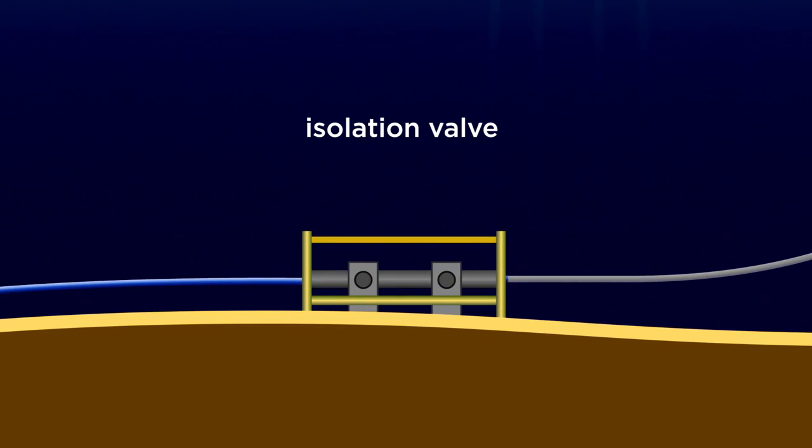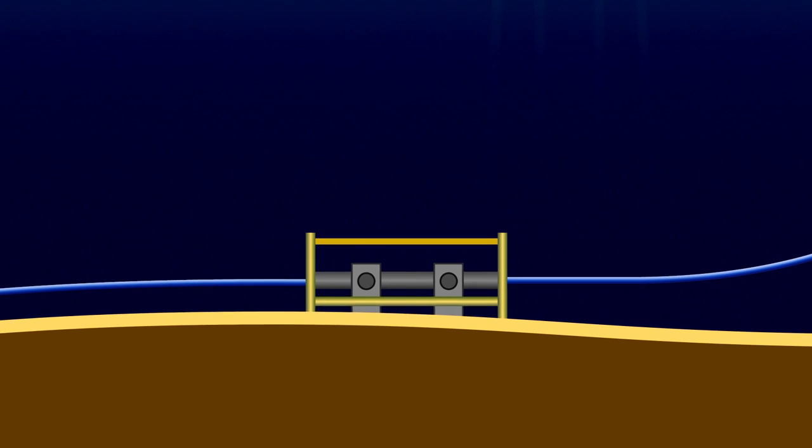Production fluid passes through a subsea isolation valve on the seabed at the base of the riser within 500 feet of the Britannia BLP. The valve safely isolates the platform from the Alder production system.